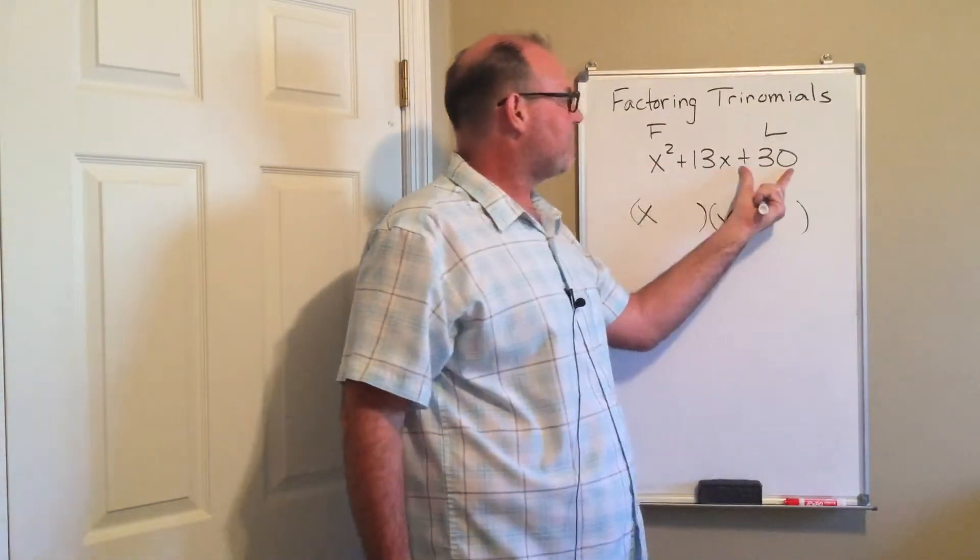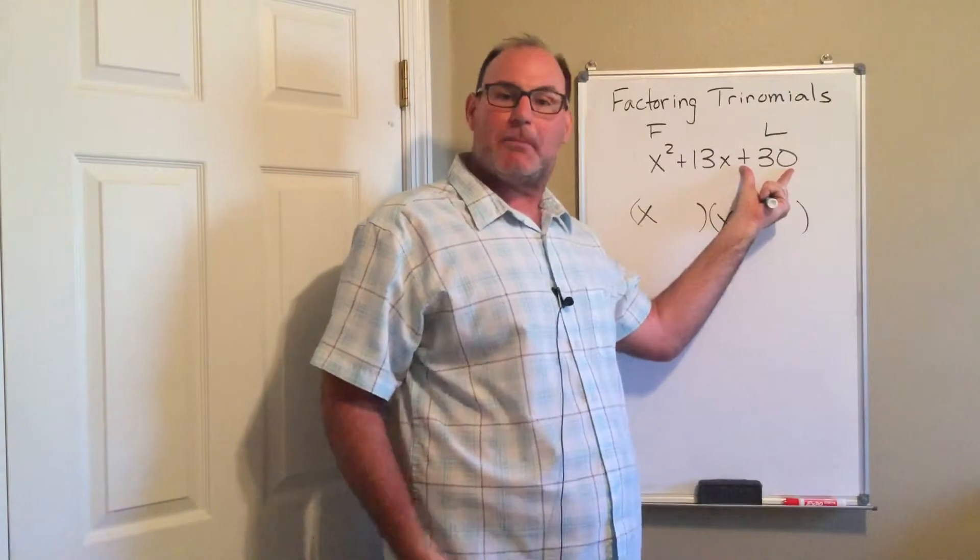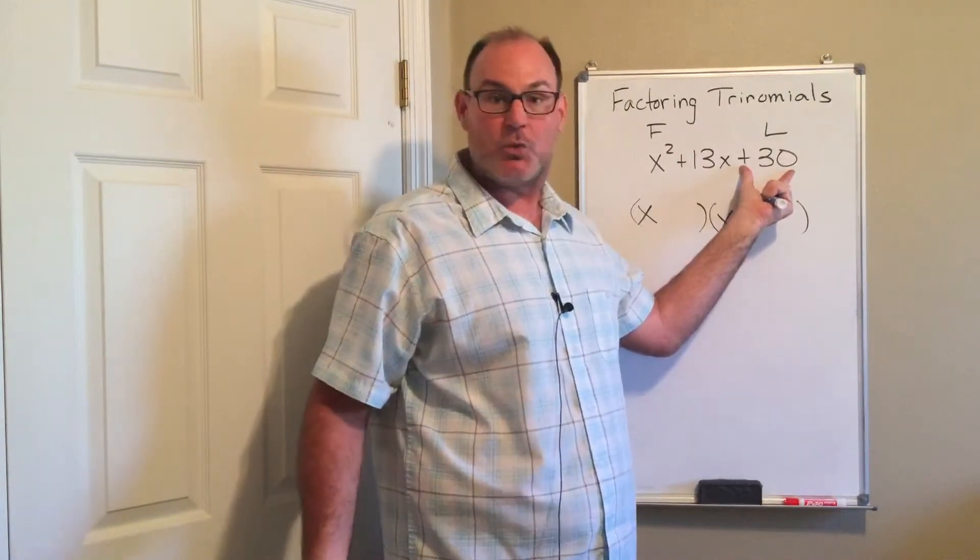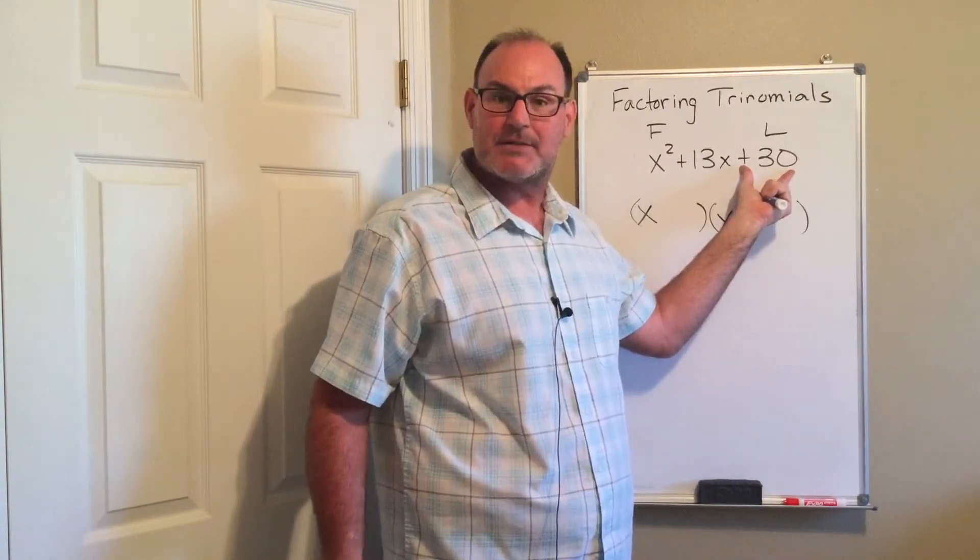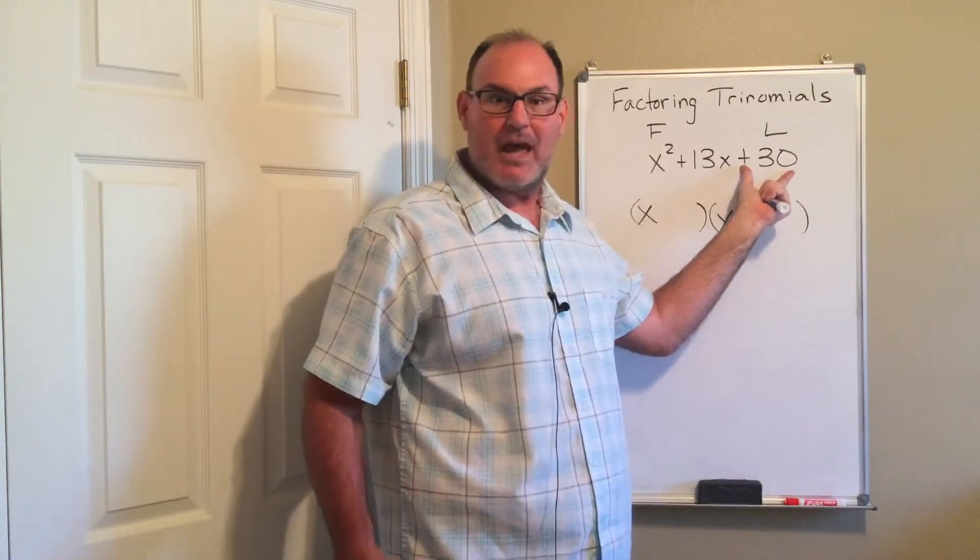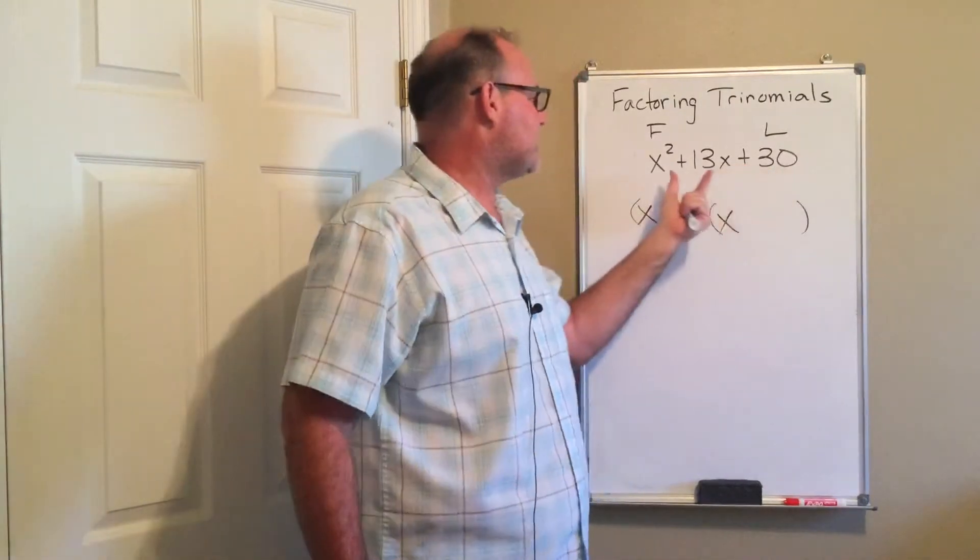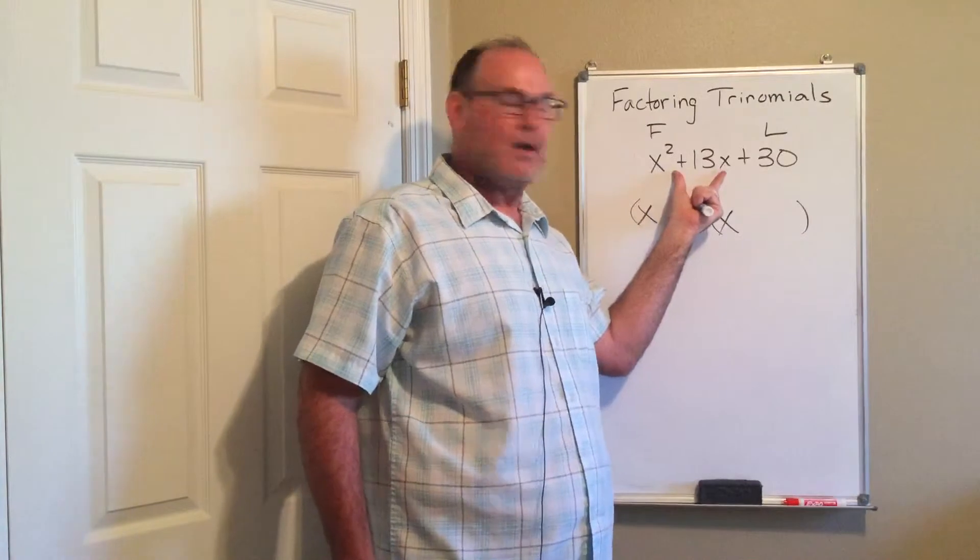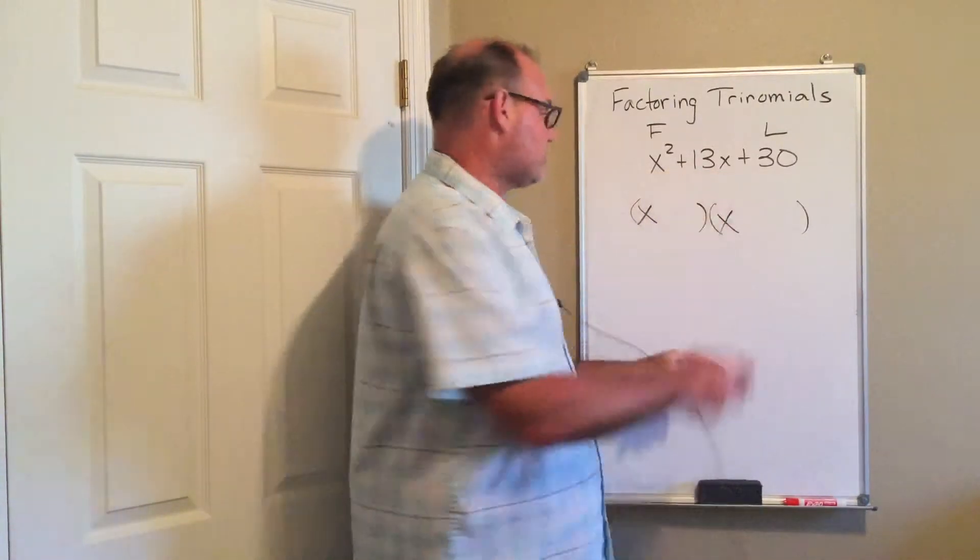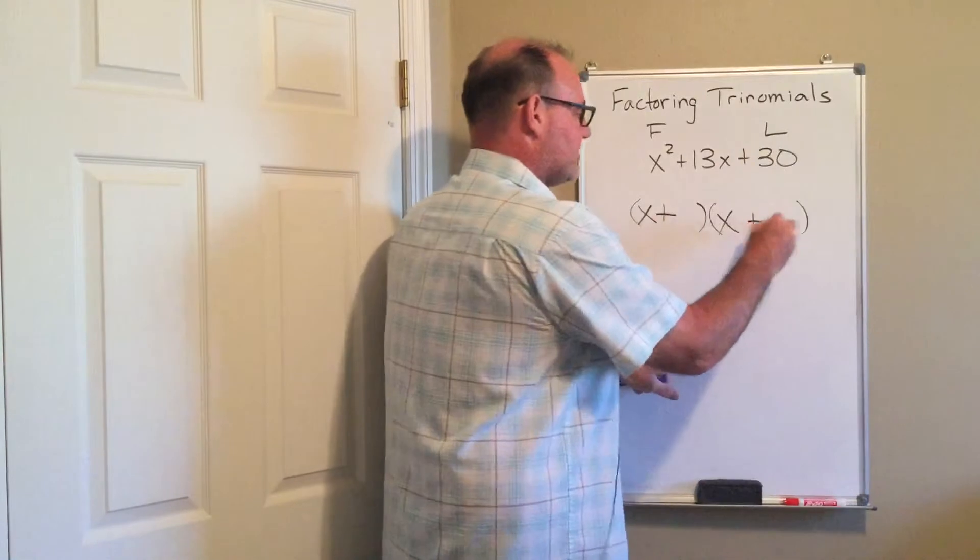It is a positive 30. How can you get a positive number when you multiply? Well, there's two ways: either two positives or two negatives. And what tells us what we're going to use is the sign on this middle term. Because it is a positive 13, I am going to use two positive factors of 30.